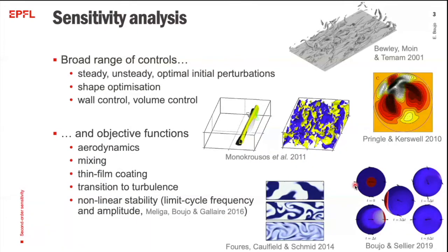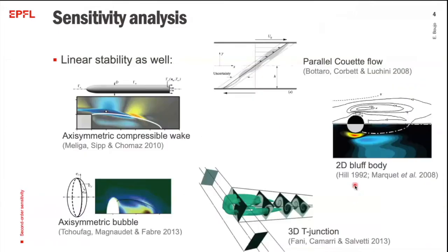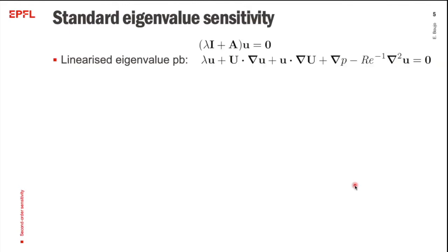Sensitivity analysis can be applied to a broad range of controls — steady and unsteady optimal perturbations, shape optimization, and so on — and it can be used for many different objective functions, including nonlinear stability properties like limit cycle frequency and amplitude. It can also be applied to standard linear stability: eigenvalues in parallel flows, 2D flows, and 3D flows. This has become very classical.